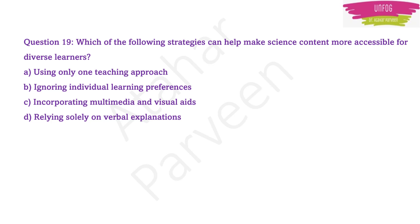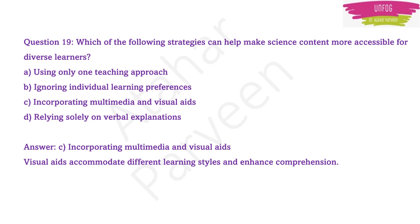Next question: which strategy can help make science content more accessible for diverse learners? Options are: using only one teaching approach; ignoring individual learning preferences; incorporating multimedia and visual aids; relying solely on verbal explanations. The correct answer is incorporating multimedia and visual aids, because visual aids accommodate different learning styles and improve comprehension.